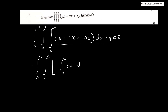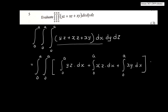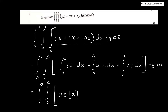We split this into: integral 0 to a of yz dx, plus integral 0 to a of xz dx, plus integral 0 to a of xy dx. Integrating with respect to x, treating yz as constant, we get x squared by 2.